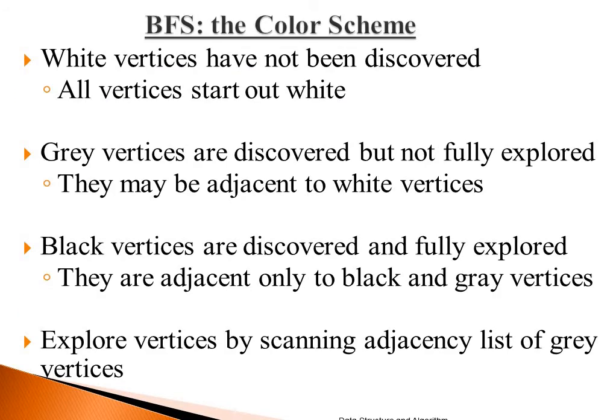BFS uses a coloring scheme — the traversal state is observed through the color of each vertex. White vertices have not been discovered; initially all vertices start in white color. Gray vertices are discovered but not fully explored — as soon as you find all adjacent vertices, they become gray and may still be adjacent to white vertices. Black vertices are discovered and fully explored; whenever you leave a vertex it becomes black, and black vertices are adjacent only to black and gray vertices.